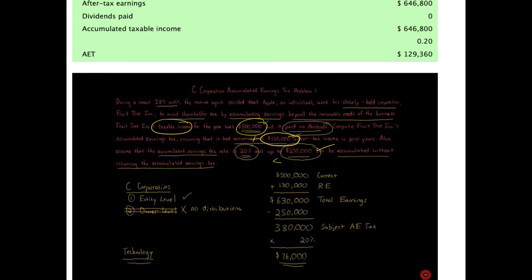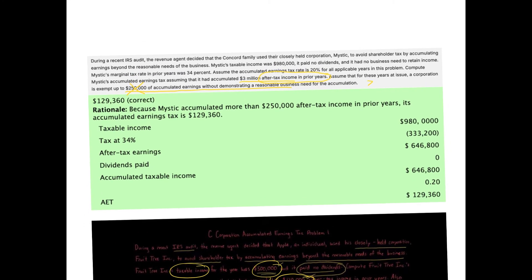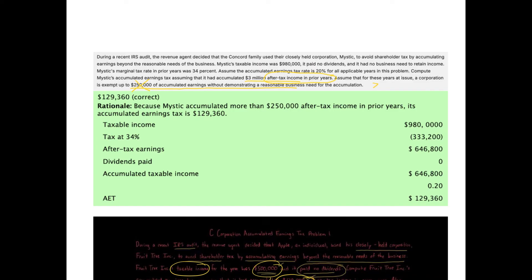In the Concord/Mystic problem, the prior years' amount of $3,000,000 is greater than or equal to the $250,000 exemption, meaning the $250,000 lifetime exemption has been fully used up — so we ignore it entirely. This is a point where students often get confused when comparing the two problems. If the prior years' accumulated amount is greater than or equal to the $250,000, that means the exemption is exhausted and we do not subtract it.